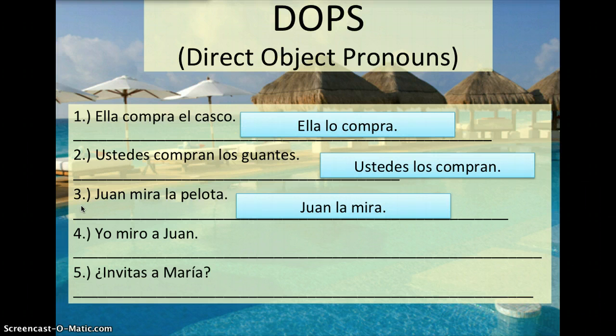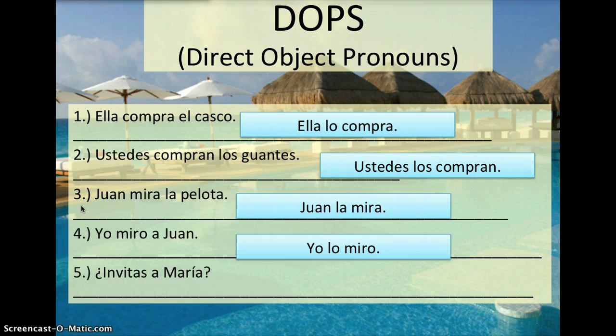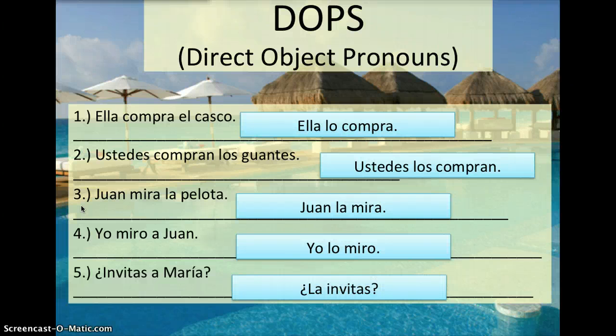Yo miro a Juan. Yo lo miro. This is our first example of a direct object pronoun being a person. Whom am I looking? Juan. So Juan is what you are replacing, and he is masculine and singular, so it is lo. Yo lo miro. ¿Invitas a María? La invitas. Are you inviting her? That is why we got la.